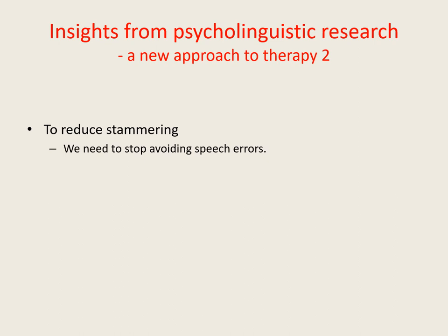In order to reduce our tendency to block and to stammer, we need to stop trying to avoid speech errors and stop worrying about how clearly and accurately we're articulating our words. This is easier said than done, because people who stammer tend to hold a deeply entrenched belief that in order not to stammer, they have to try as hard as they can to articulate potential problem words clearly and accurately. This false belief tends to be reinforced by traditional approaches to stammering therapy, as well as by society in general.